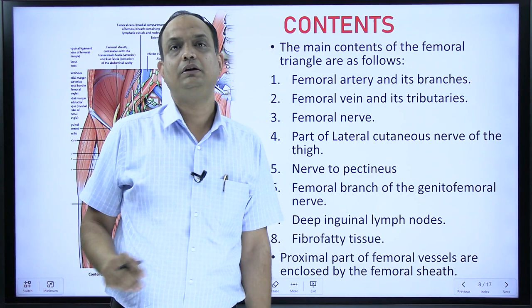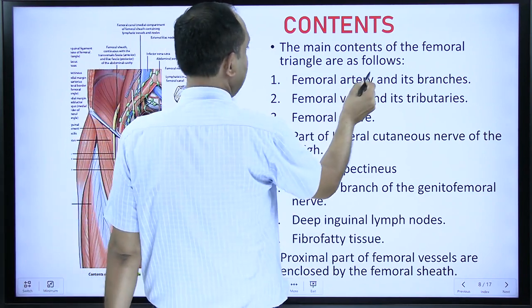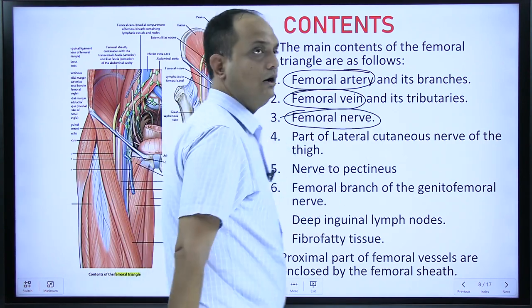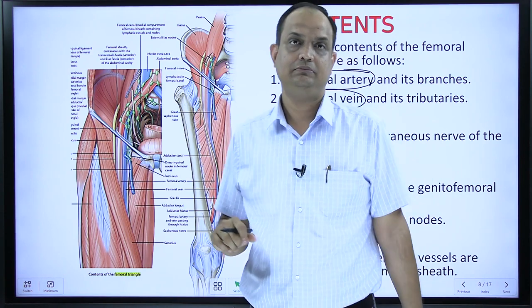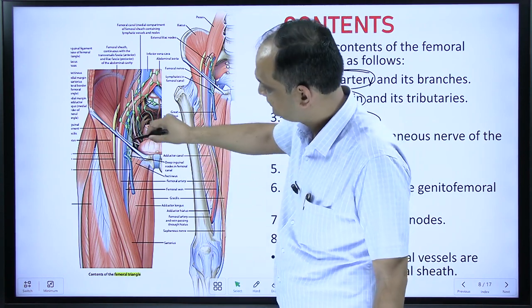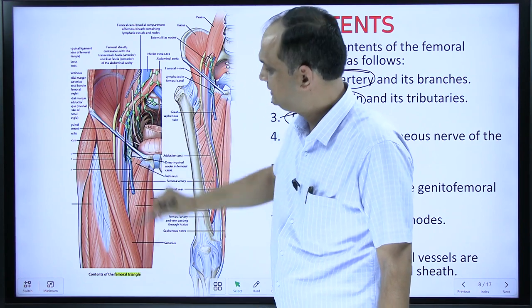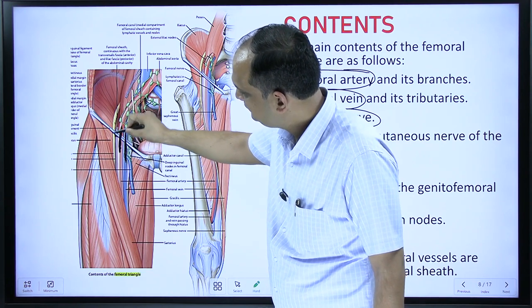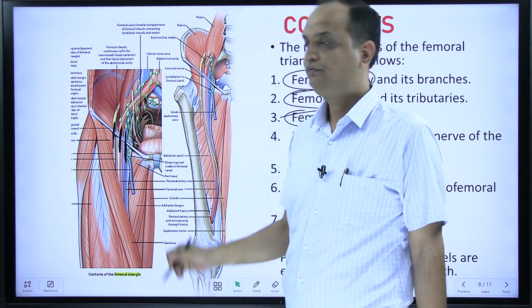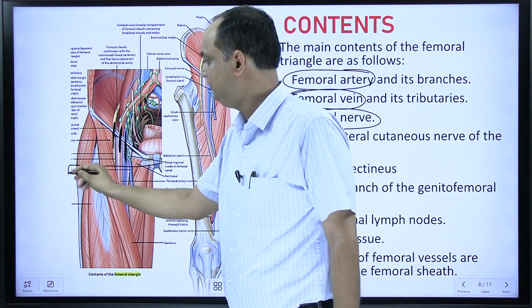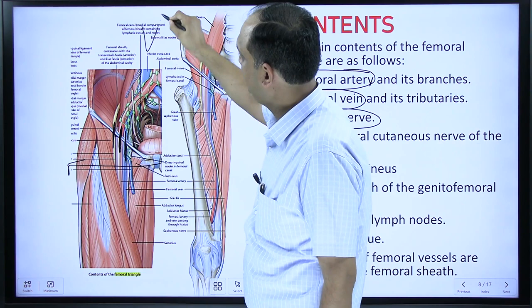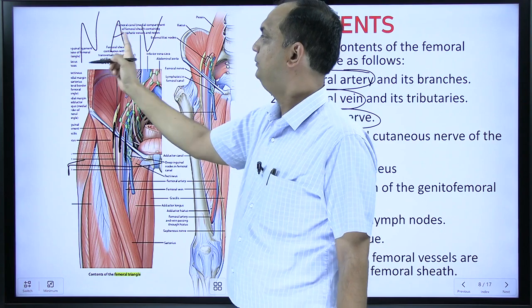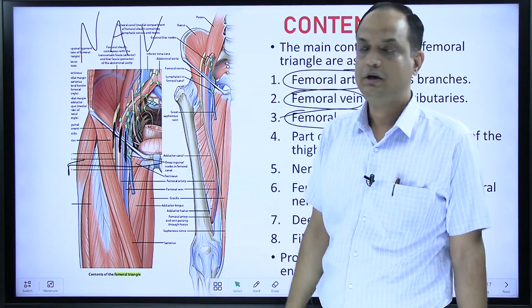The nerves present in the femoral triangle are branches of the lumbar plexus, which emerge from the psoas major muscle. There are three constant contents: femoral artery, femoral vein, and femoral nerve. The femoral vein is the medial-most content, then the femoral artery, then the femoral nerve. So from medial to lateral the relation is: Vein, Artery, Nerve — V, A, N.